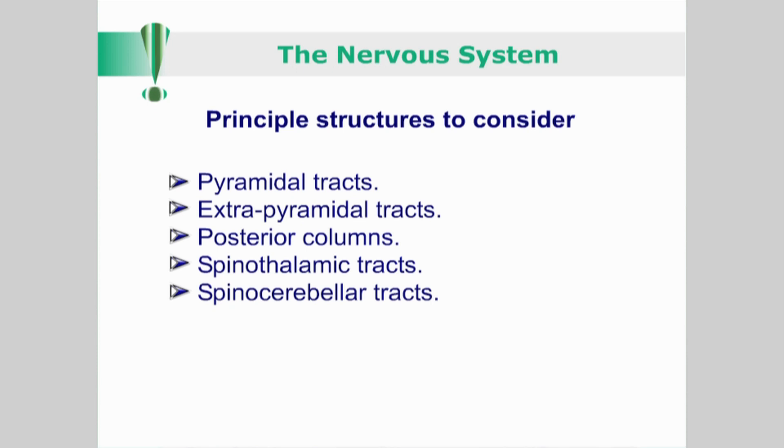In particular, when referring to the spinal cord, keep in mind the distinctions between the pyramidal and extrapyramidal tracts, the ascending tracts like the posterior columns and spinothalamic tracts, and the spinal cerebellar tracts. Also consider the autonomic nervous systems and associated ganglia.